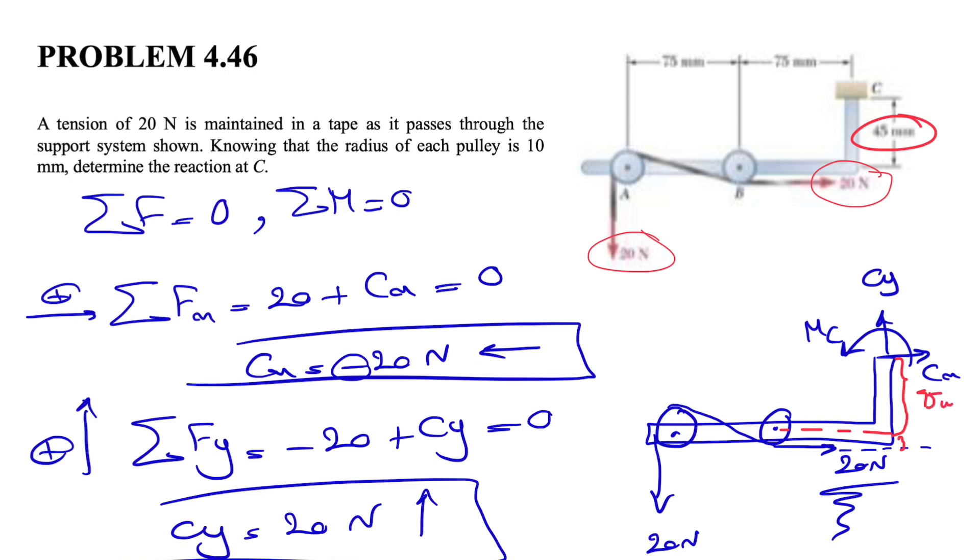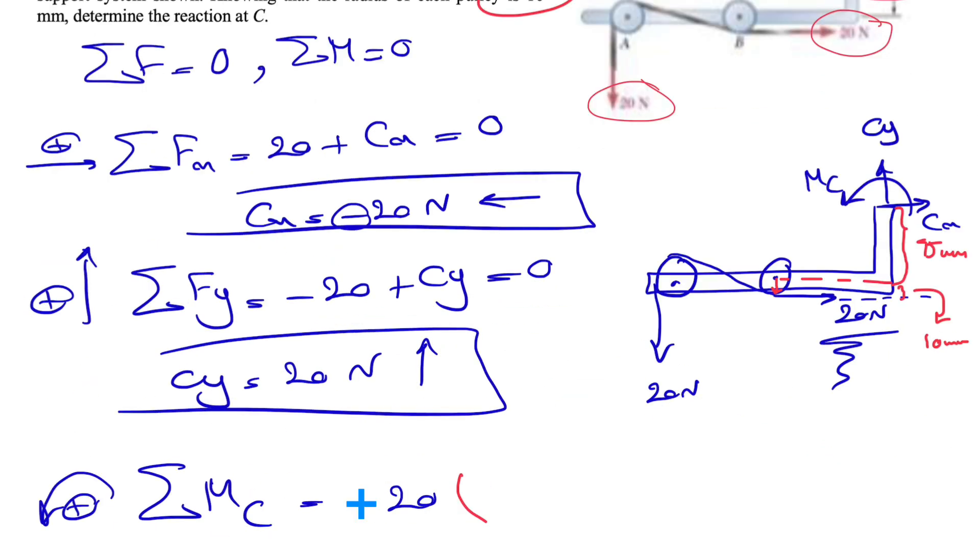This little distance here would be the radius of the pulley, which from the question we know is 10 millimeters. So we have another 10 millimeters in here. If we want to multiply the force by the distance, we simply have 45 plus 10, which is 55.